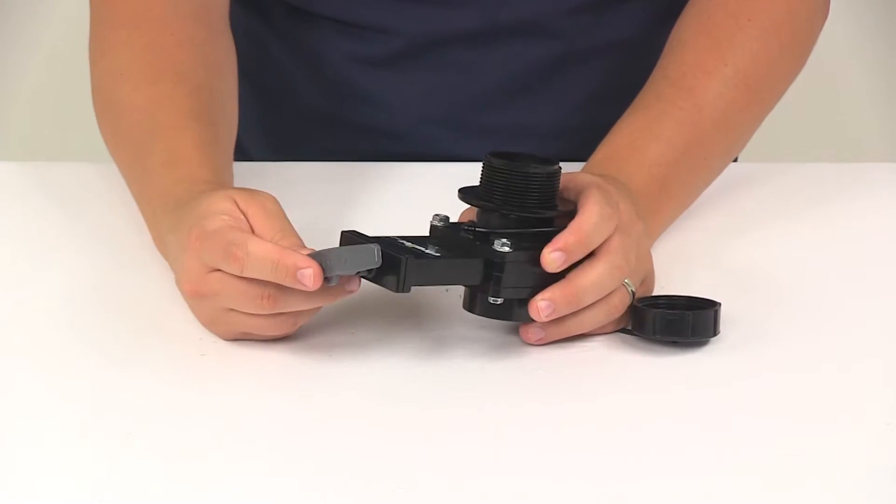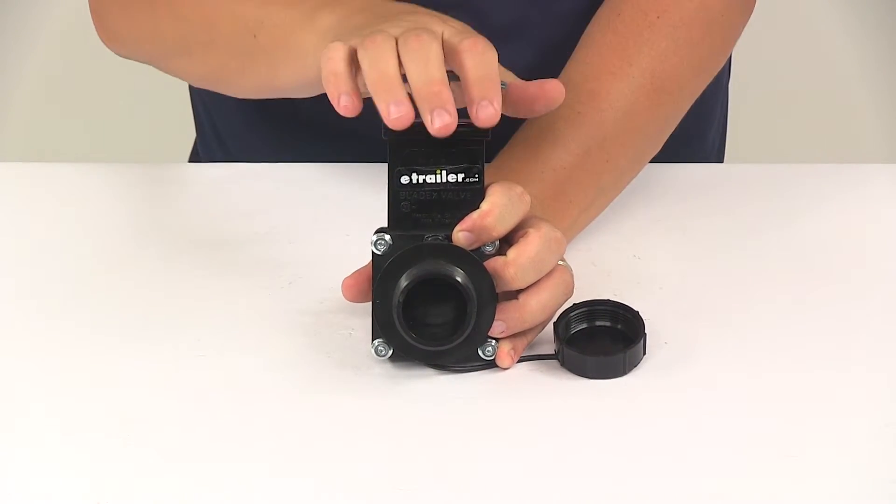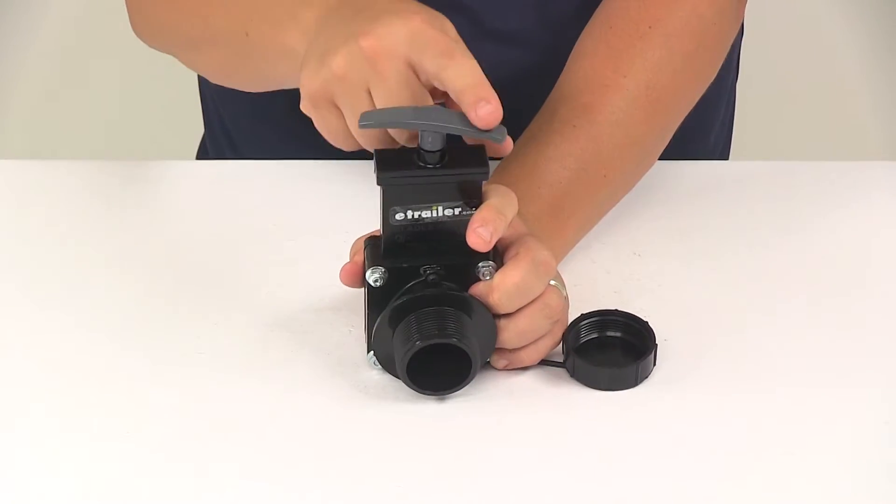On top we're going to have the easily accessible t-handle. Makes opening and closing the gate quick and easy. It's going to be gray in color.